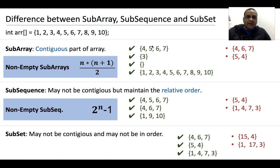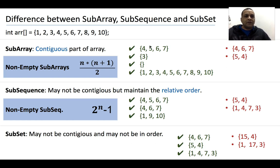I leave you with three questions. Write three functions: the first should print all the subarrays for a given array, the second should print all the subsequences for the given array, and the third should print all the subsets for the given array. I will be providing solutions to these three questions in a few days. If you want to get notified when the solution is uploaded on YouTube, please subscribe to our channel. Thank you.